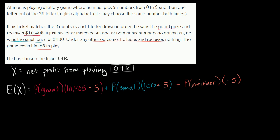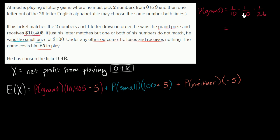What's the probability of the grand prize? The probability that he gets the first number right is 1 in 10, the second number right is 1 in 10, and the probability that he gets the letter right is 1 in 26. These are all independent, so the probability of the grand prize is 1 in 2,600.